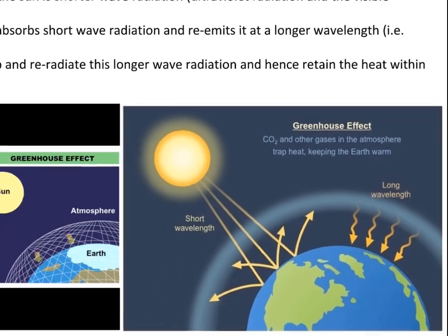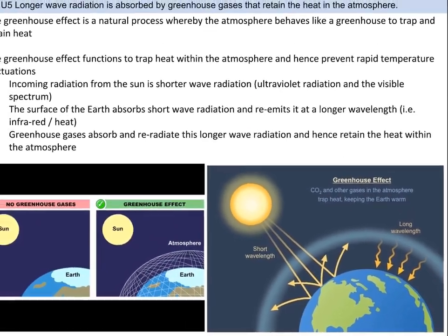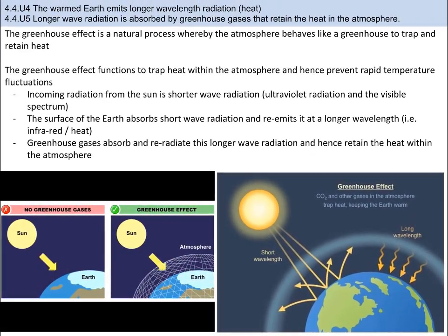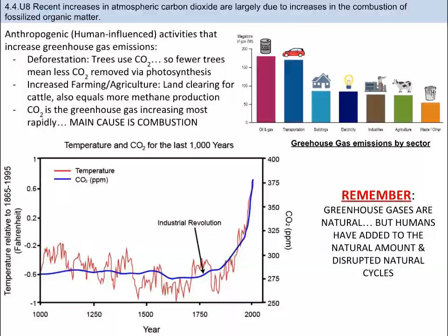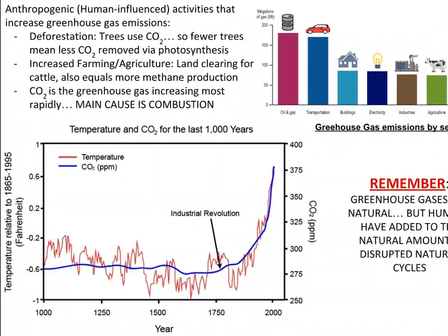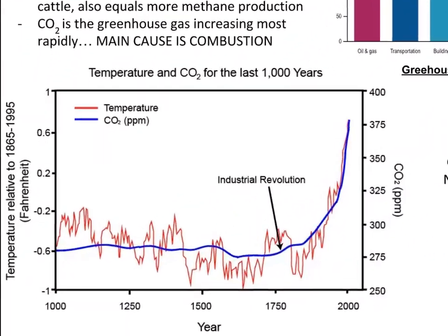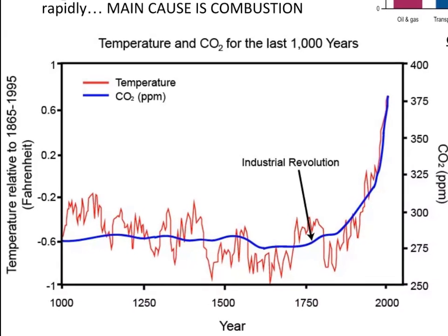You can see in the video clip what would happen if the Earth had no greenhouse effect. You certainly need to know the details of this process, and in my experience, students get tripped up on the short-wave and long-wave energy. The greenhouse gas that is increasing most rapidly in the atmosphere is carbon dioxide, and the main cause is combustion.